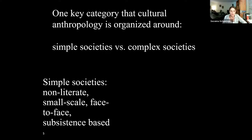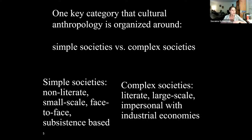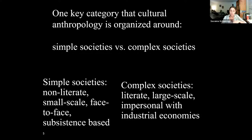Simple societies don't really rely on literacy — rather oral tradition — and are subsistence-based, meaning whether they hunt and gather or fish, they provide for themselves. In contrast, complex societies like the US, Sweden, Japan — large industrialized societies — rely on literacy, large populations, so large that it's impersonal. You'll never really know most of the people that share your culture. And we have industrial economies, not subsistence-based, but engaged in the cash and wage economy.